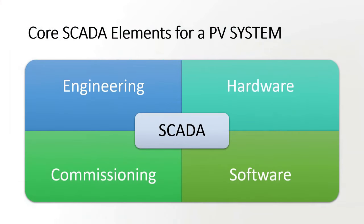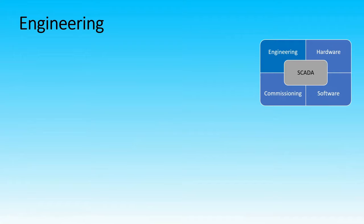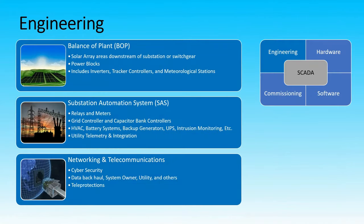In this section, we will discuss briefly the core elements or aspects to be taken into consideration when putting up a functional SCADA system. First, we have engineering. Engineering plays a big role as this involves balance of plant, substation automation, as well as network and telecommunications. The ideal SCADA system should have an integrated data system, telemetry, and control systems for utility interconnections. This should also have support for system owners and third-party data feeds using OPC, DNP3, Modbus, and other communication protocols.